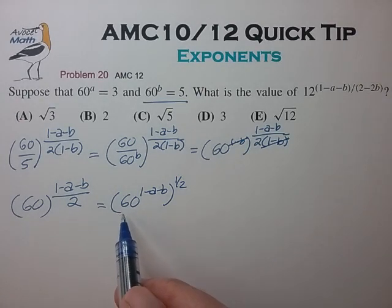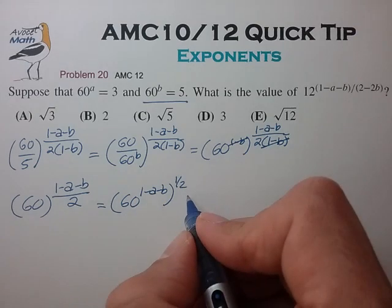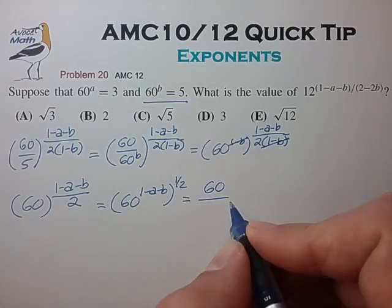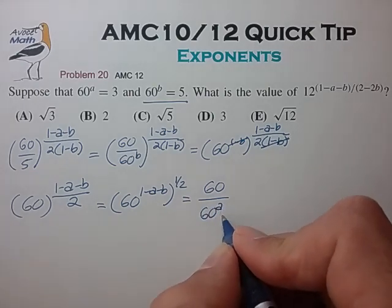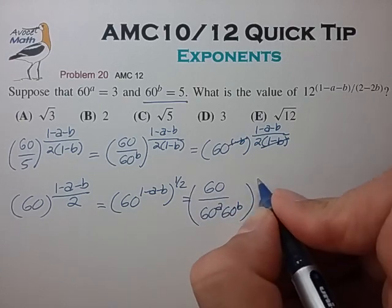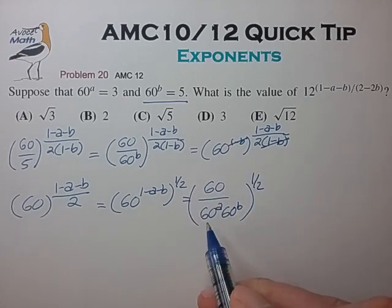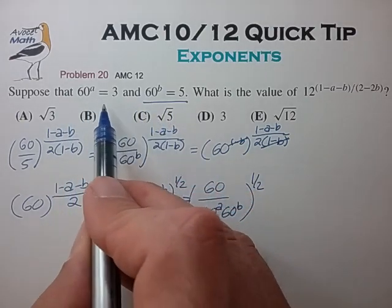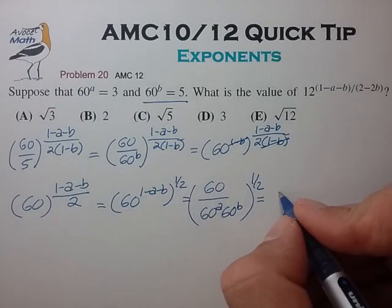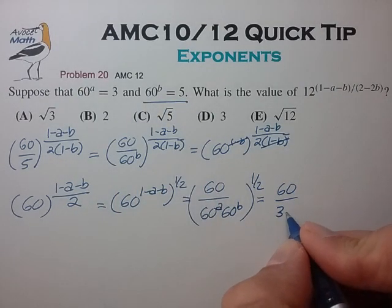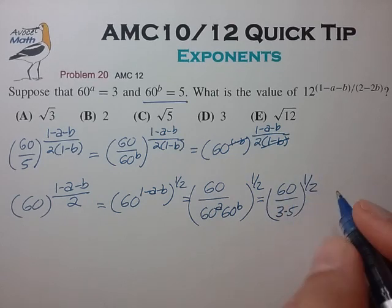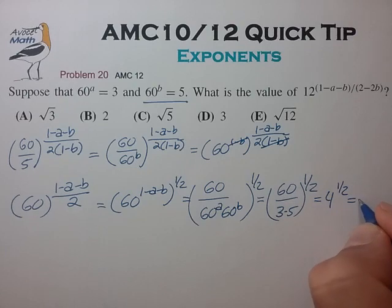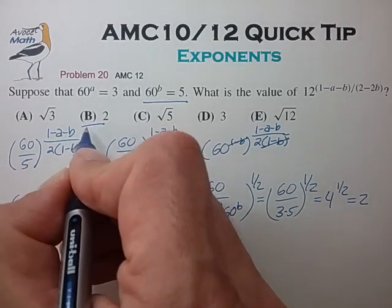And now using the division rule for exponents, we can write 60 to the 1 minus a minus b as 60 divided by 60^a, 60^b, all to the 1/2. And now we can use this information to substitute numbers for these exponents, all of which works out to 4 to the 1/2, which is equal to 2 for choice B.